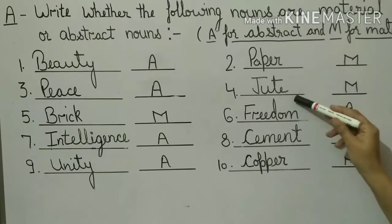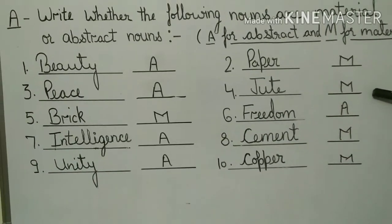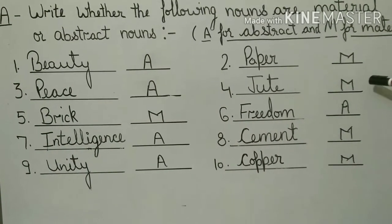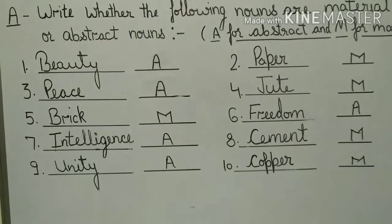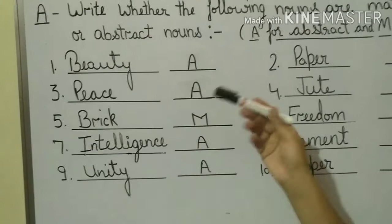One more example, that is jute. Jute is a material by which we can make things. We can make bags. We can touch it or we can make things from it. Another is brick. Brick is also a material by which we can make things.